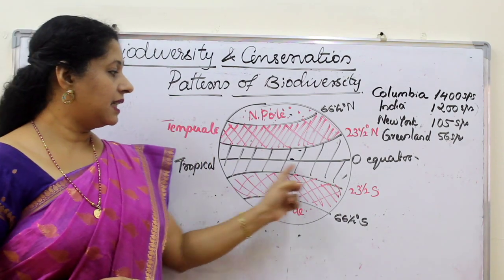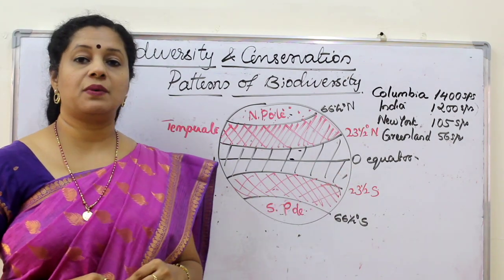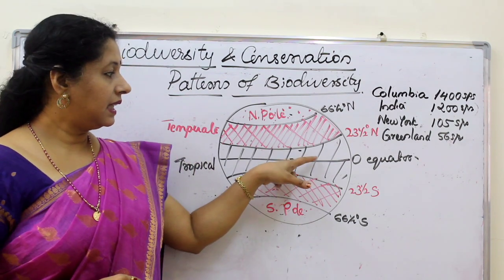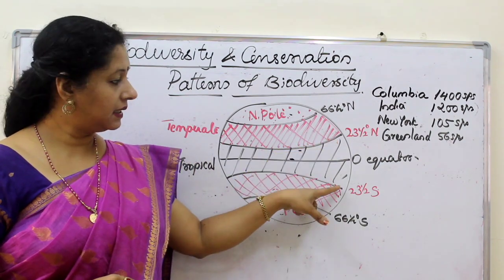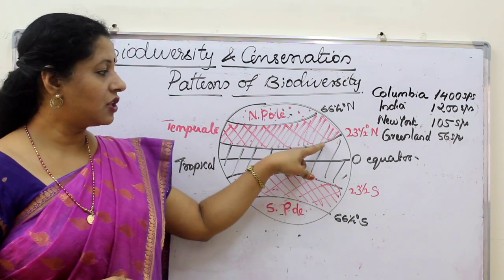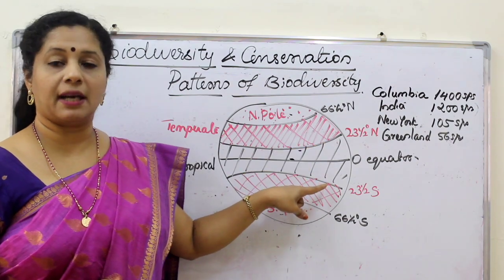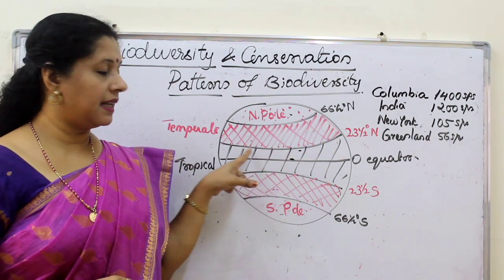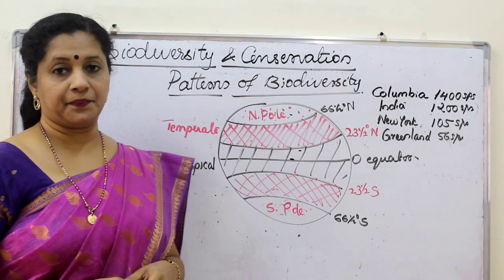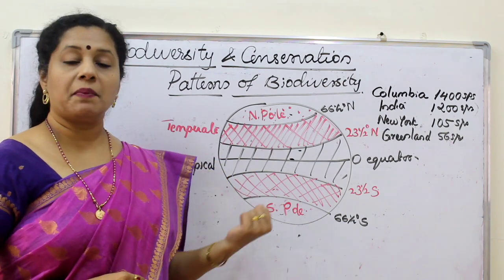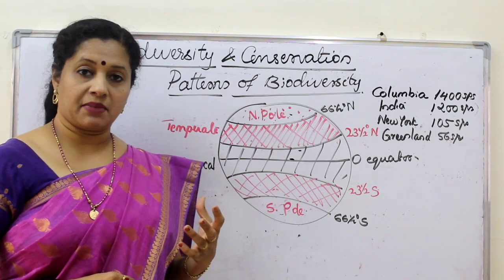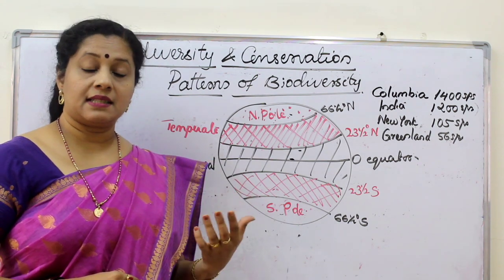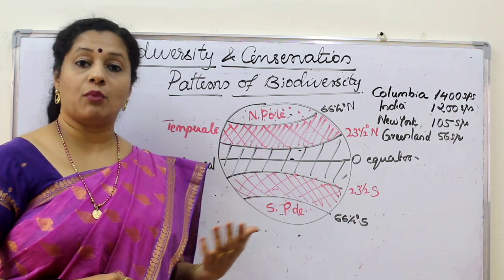We know that 0 degree in the middle — that latitude is called the equator. 23.5 degree north and 23.5 degree south, we have Tropic of Cancer and Tropic of Capricorn. The region between this area is called the tropical region. This tropical region has got very high temperature, high intensity of light, and less seasonal or moderate climate.